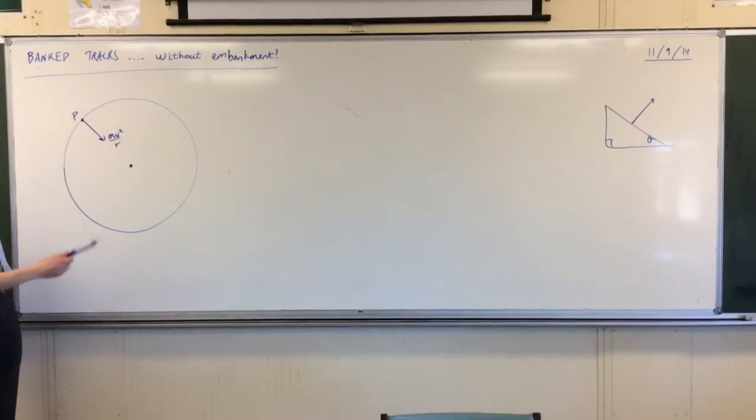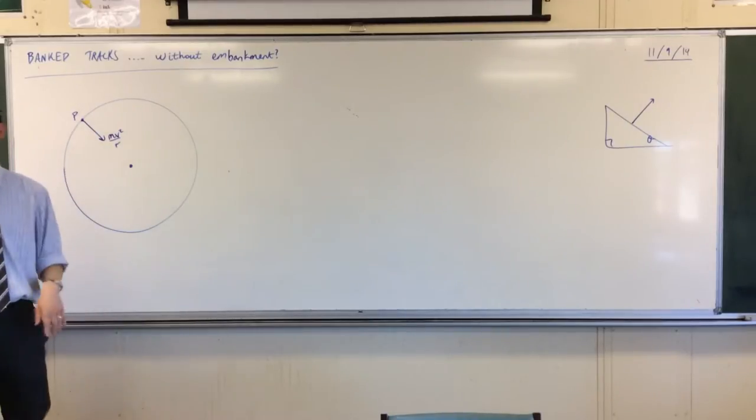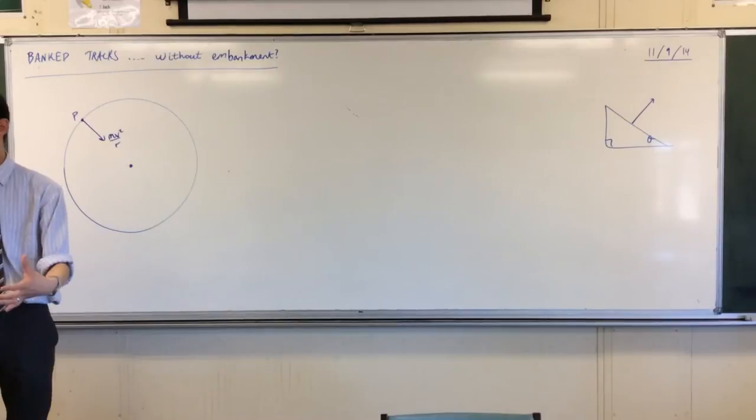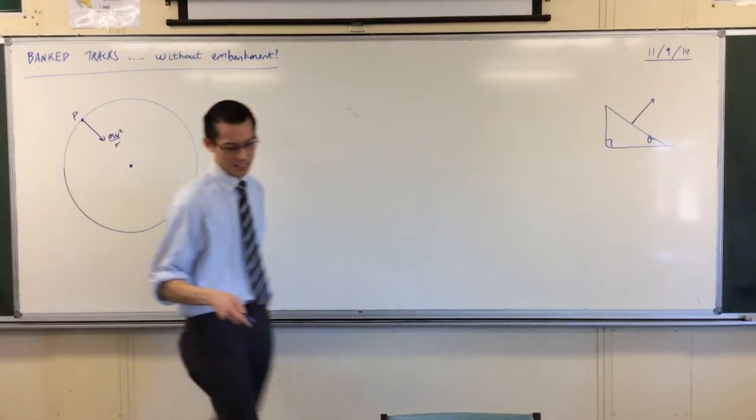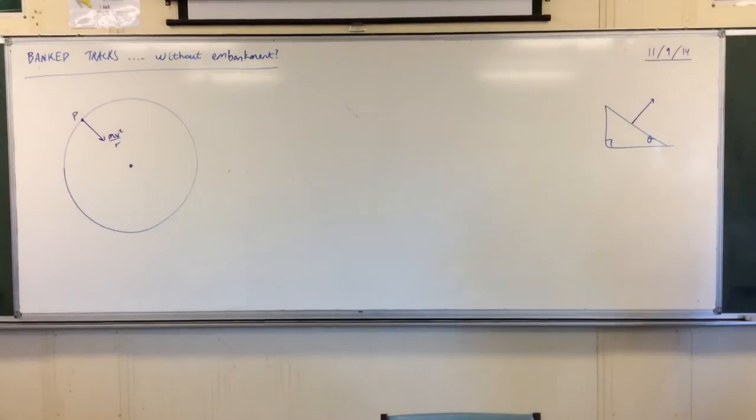Now, here's the problem though. When you don't have a bank track, how do you do this? We've already discussed that you've got friction on the wheels, and that's good. But as you'll see in a second, sometimes you don't have much friction on the wheels to count on.